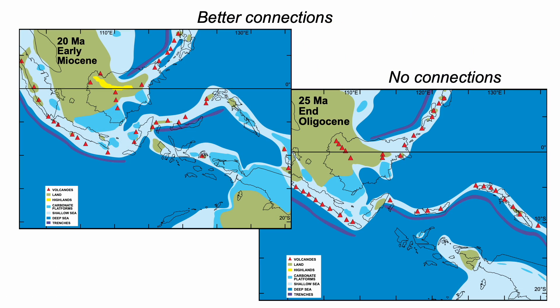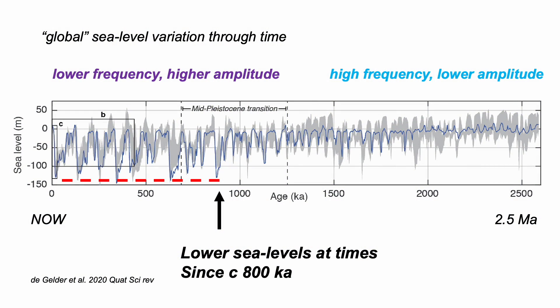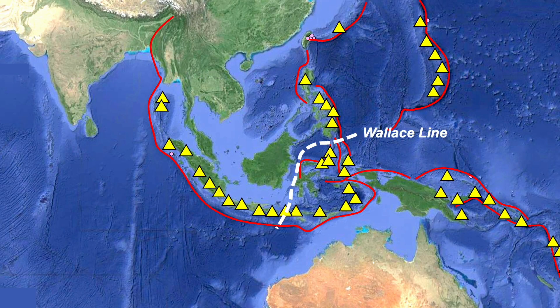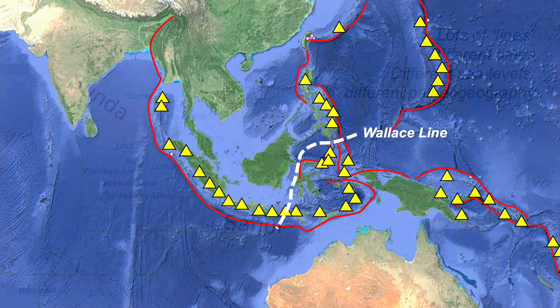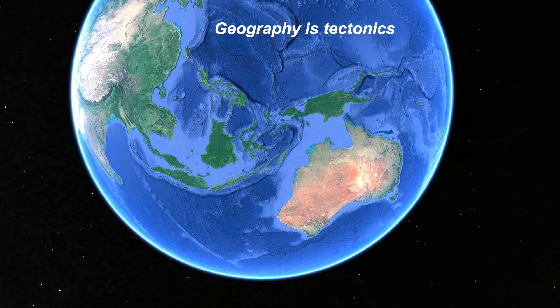So it really is all about tectonics — land bridges and connections, controlling the gateways, modulated by the transient climatic effects of orbital cycles. Which gets us back to the Wallace Line. It's not a single line, not only because different plants and animals can cross different sized seaways, but also because paleogeography and sea level change through geological time. All of this geography is intimately tied to the tectonic processes that operate in our planet.